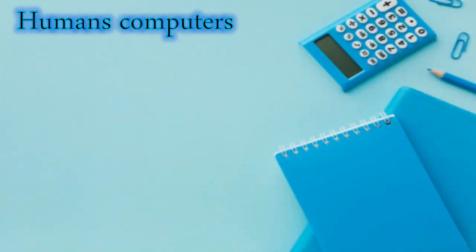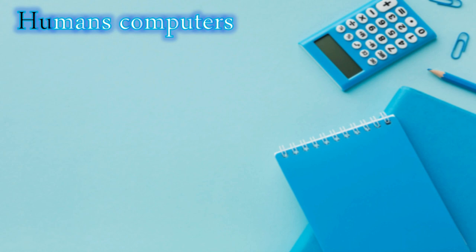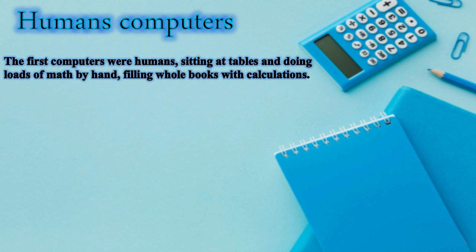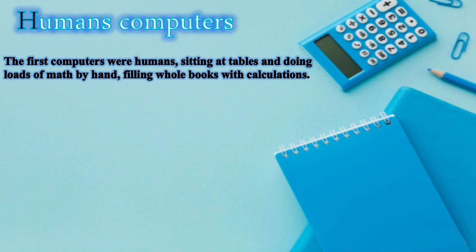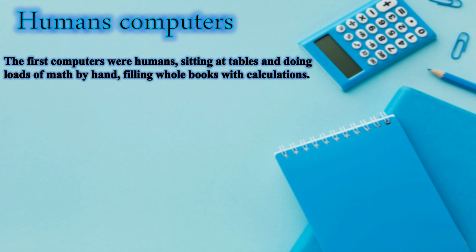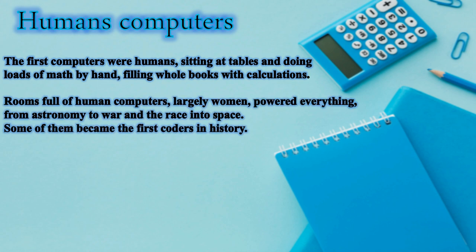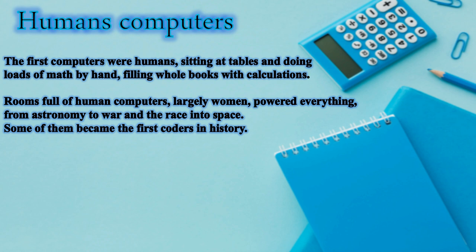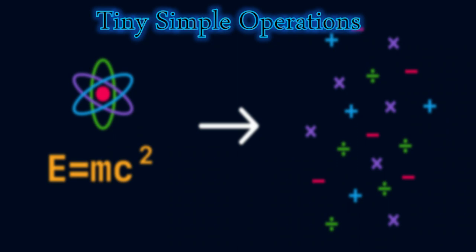The first computers were actually humans — people sitting at tables doing lots of math by hand, filling whole books with calculations. Rooms full of human computers, largely women, powered everything from astronomy to war and the race into space. Some of them became the first coders in history.